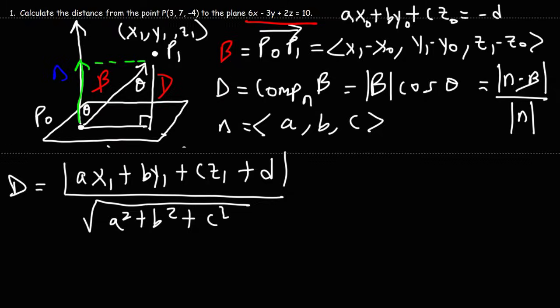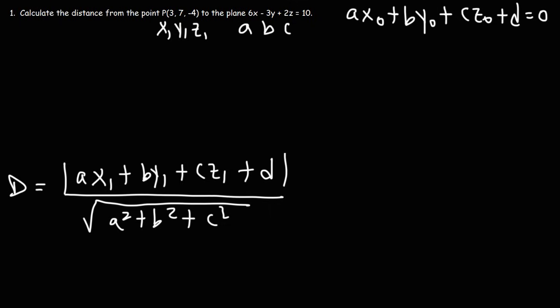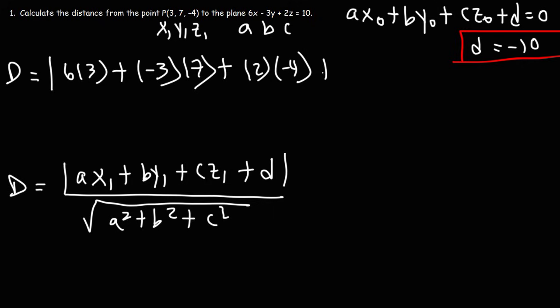So now, let's work on finishing the problem. Point P1 is 3, 7, negative 4. X1 is 3, Y1 is 7, Z1 is negative 4. And A is 6, B is negative 3, C is 2. D, we'll be careful with this one. Remember the formula - D is on the left side of the equation, not on the right side. So D is not 10, but D is negative 10. That's one trap you don't want to fall for. So let's plug everything in. A is 6 times X1, which is 3. B is negative 3, Y1 is 7. C is 2, Z1 is negative 4, and D is negative 10.